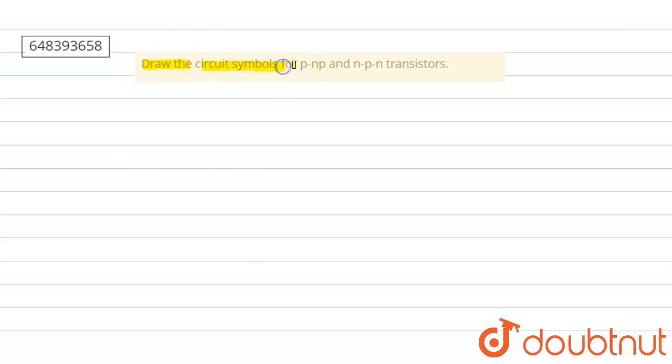Okay, so let's go with the solutions here. In the question, it is asked that we need to make circuit symbols for PNP and NPN transistor. So first of all, we draw PNP transistors.